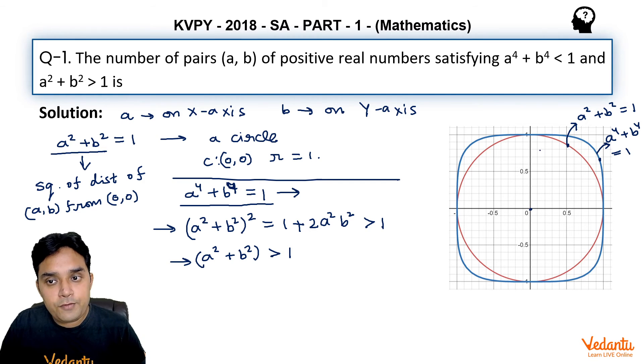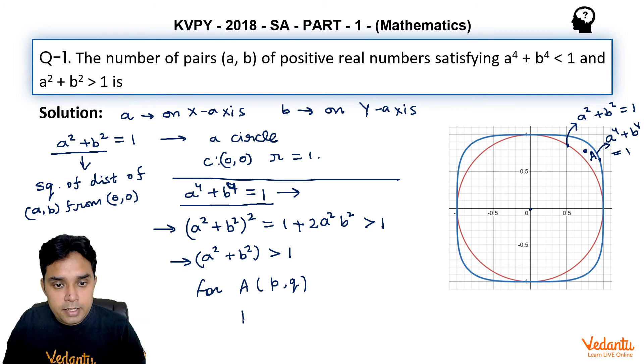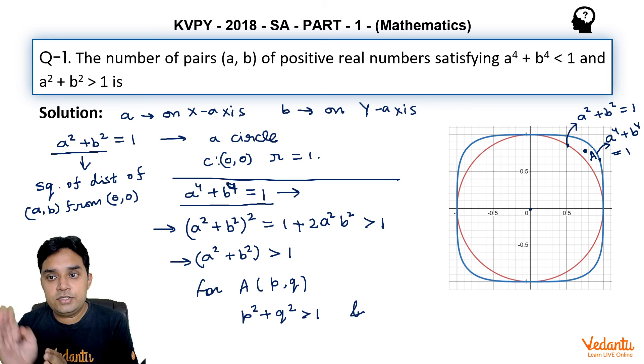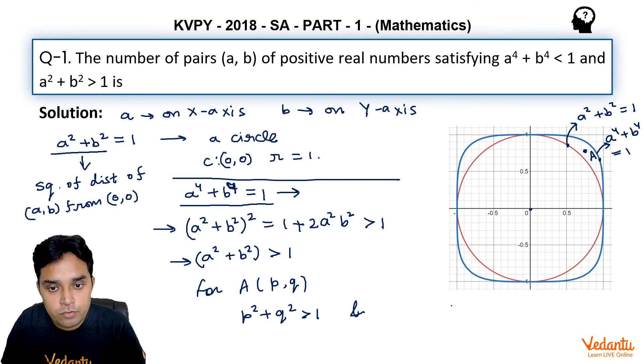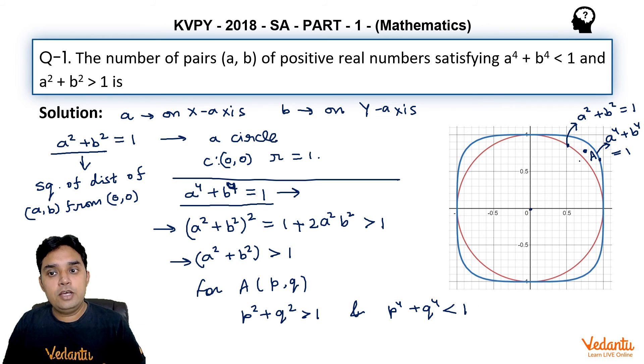Now let us assume a point between these two graphs at (p,q). For this point, p²+q²>1 because it is lying outside the circle whose radius is 1. And also because this point is lying inside the region given by a⁴+b⁴=1, so p⁴+q⁴<1 for such point.